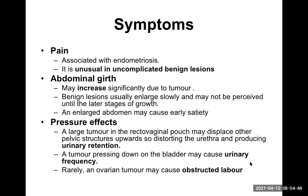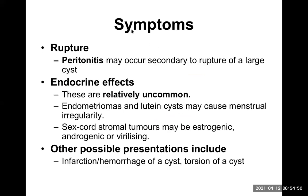Other symptoms include rupture of the mass. If the content leaks into the peritoneal or pelvic cavity, it may lead to peritonitis — initially chemical peritonitis, and later bacterial peritonitis. Some endocrine effects may occur, but these are more common in malignant tumors than benign ones and are relatively uncommon in benign ovarian tumors.